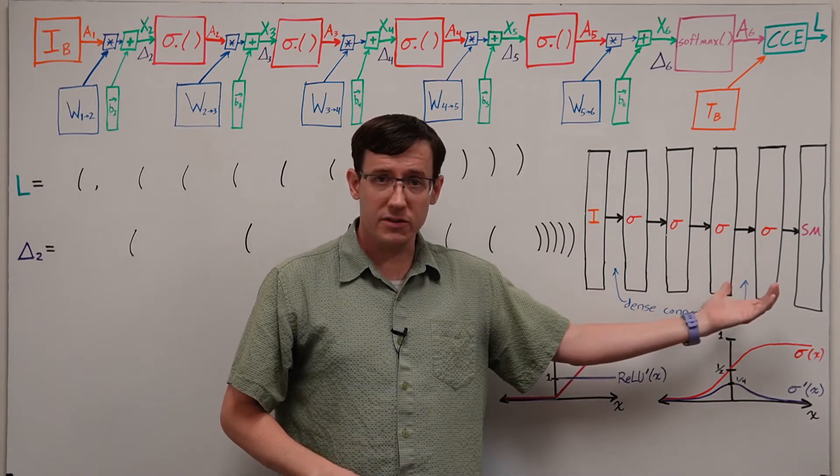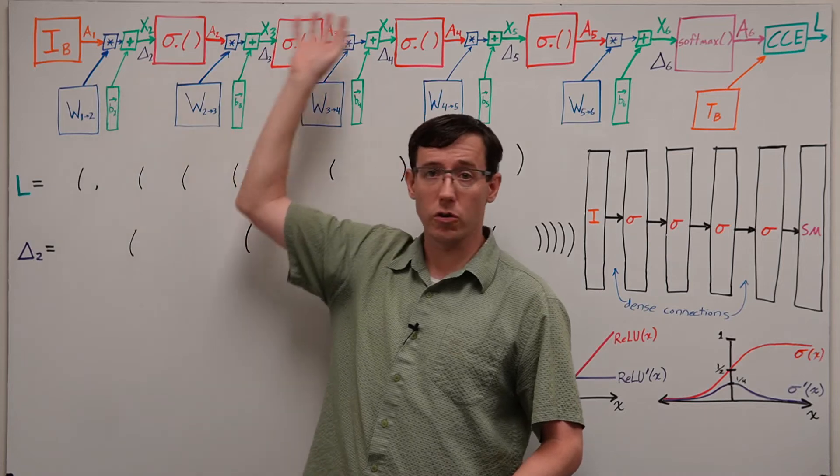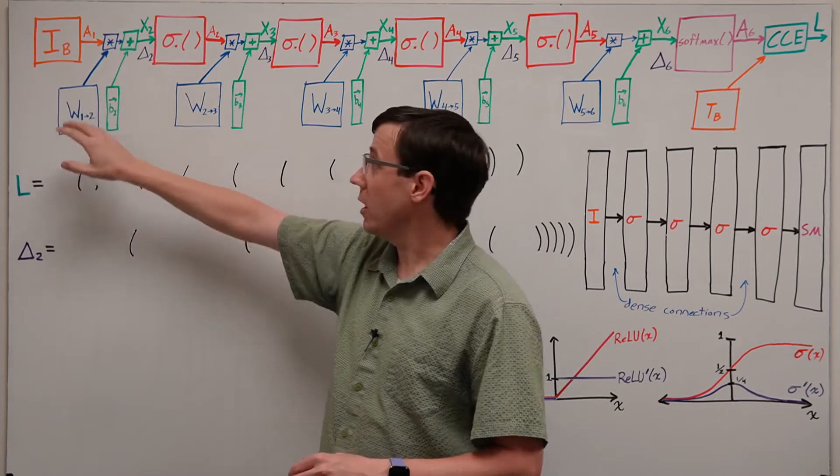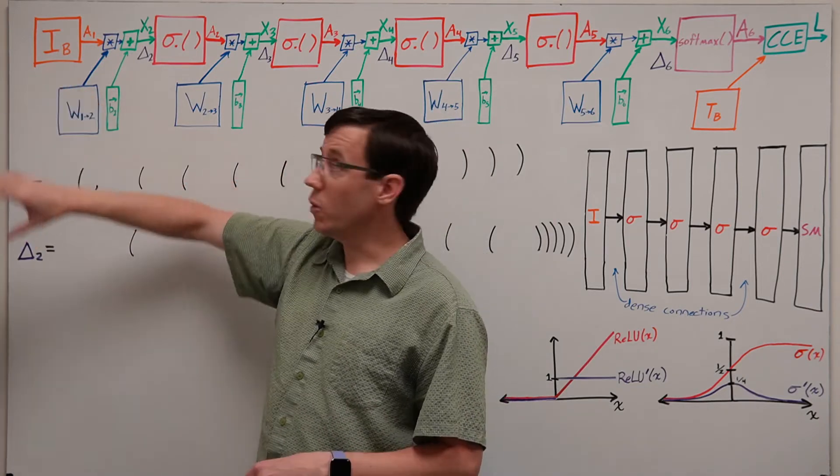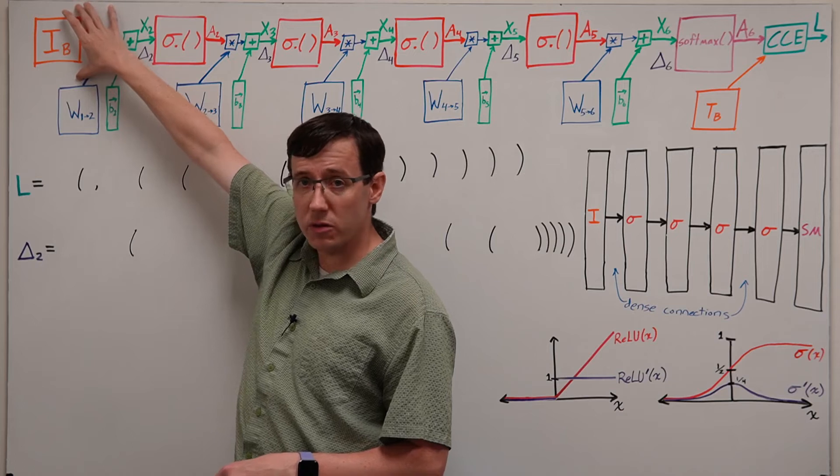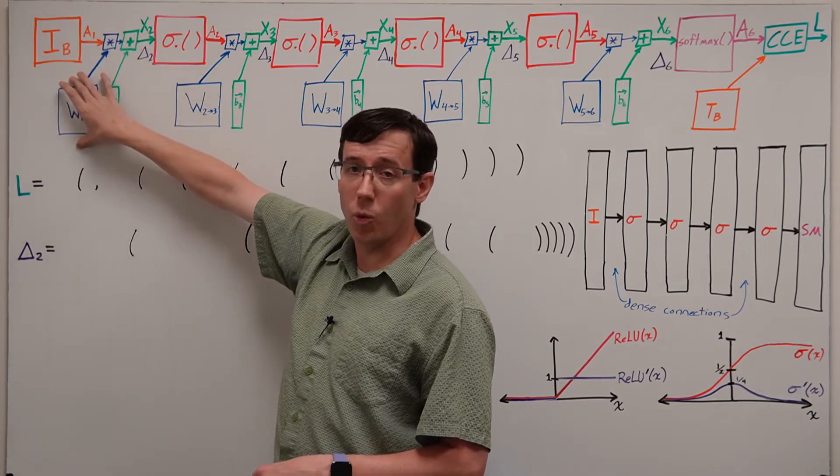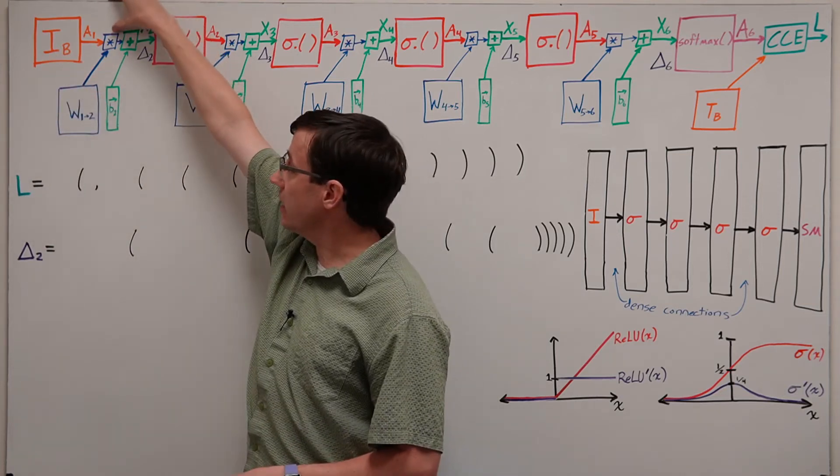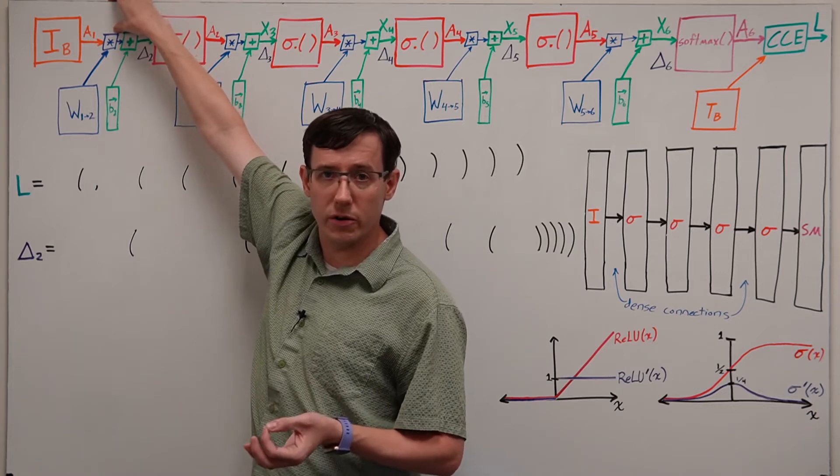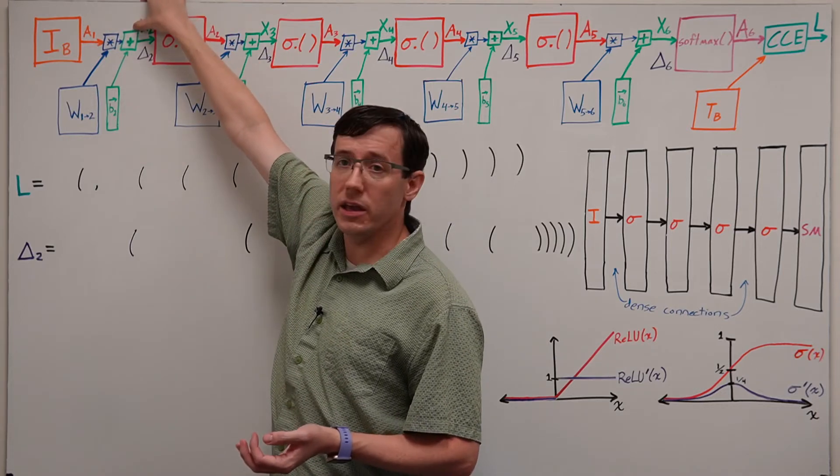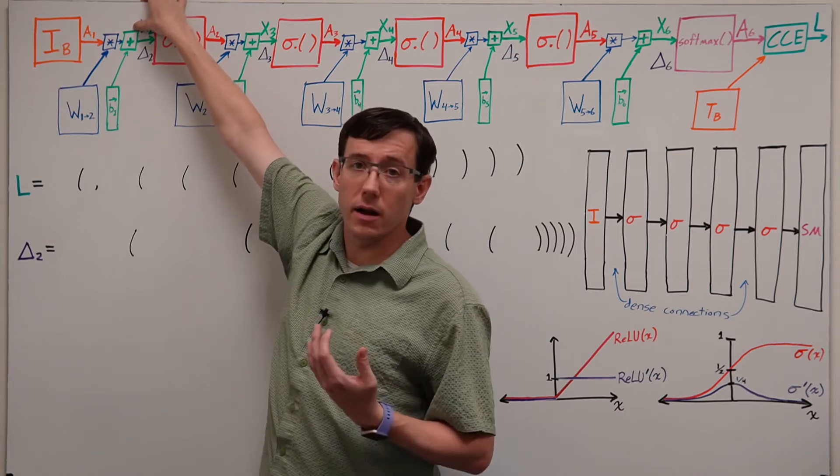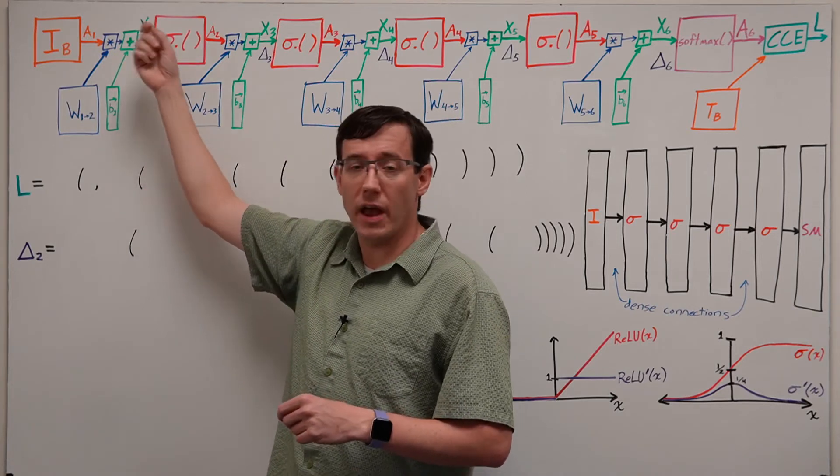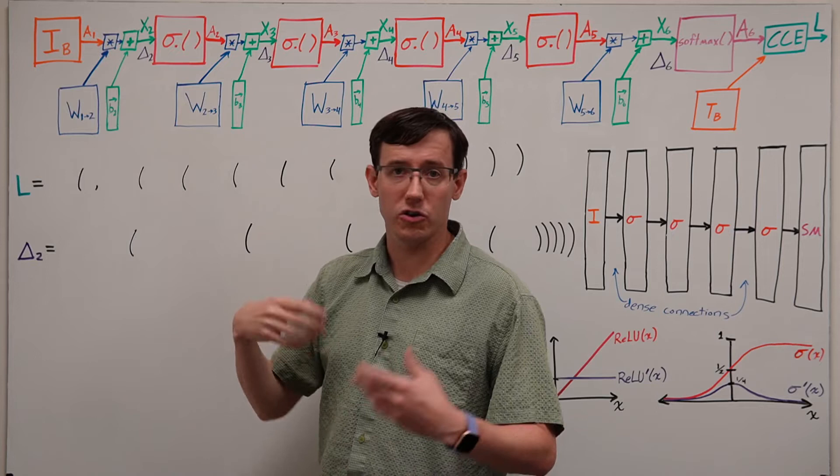Another way we could visualize this neural network is in the computational graph shown at the top. This graph shows the sequence of operations that gets applied to each batch of data. We start with a matrix of inputs and we multiply the weight matrix from layer 1 to layer 2 by those inputs, which I'll indicate by this asterisk operation. And then we add the vector of biases to every column, which I'll indicate by this plus. And that produces the inputs x2 that go into the activation function at layer 2.